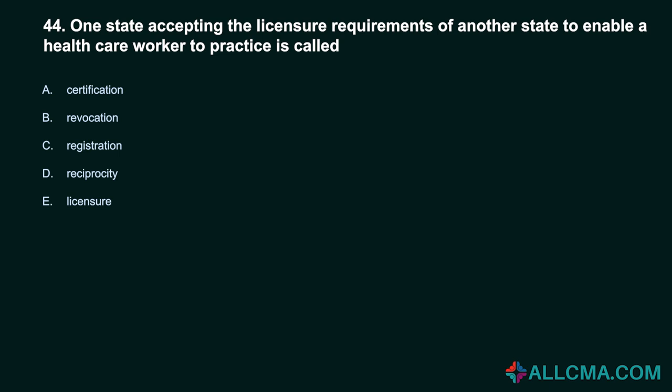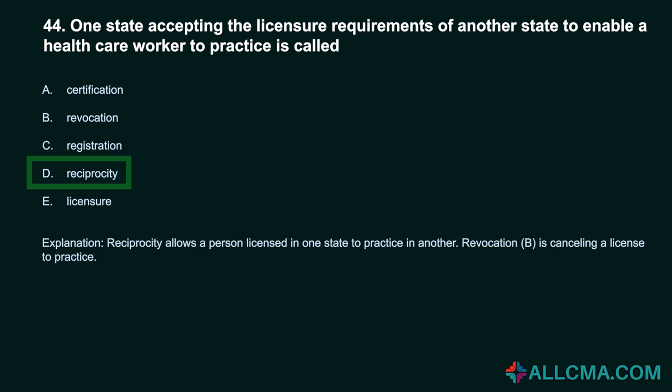Question 44: One state accepting the licensure requirements of another state to enable a healthcare worker to practice is called: A. Certification. B. Revocation. C. Registration. D. Reciprocity. E. Licensure. Correct answer: D. Reciprocity. Reciprocity allows a person licensed in one state to practice in another. Revocation is cancelling a license to practice.